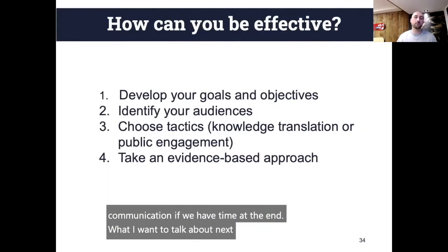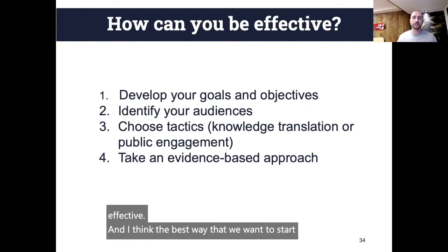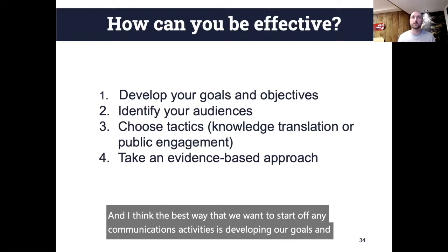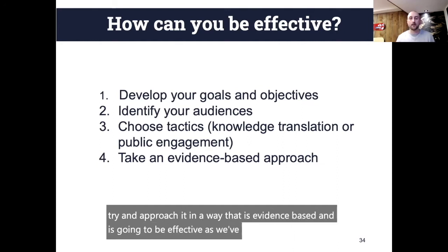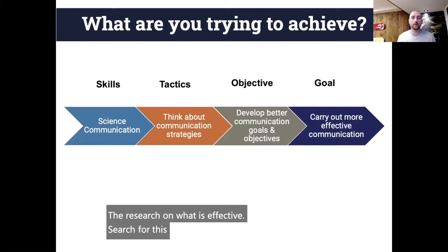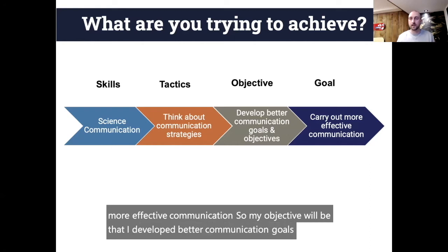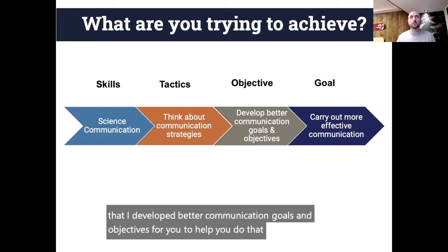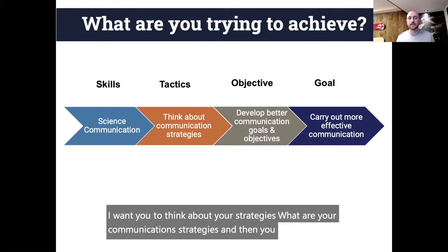What I want to talk about next is how you can be effective. The best way to start any communications activities is developing your goals and objectives. Then you can look at your audiences, choose the tactics you want to employ, and try to approach it in an evidence-based way. For this workshop, my goal is that you are able to carry out more effective communication. My objective would be that I develop better communication goals and objectives to help you do that. I want you to think about your communication strategies — then you can find the science communication skills that you need.